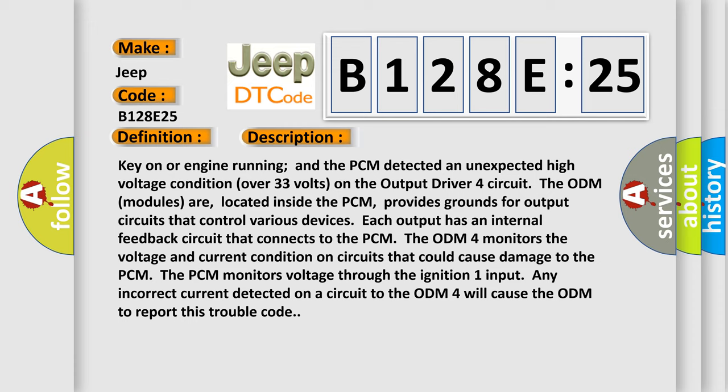The PCM provides grounds for output circuits that control various devices. Each output has an internal feedback circuit that connects to the PCM. The ODM-4 monitors the voltage and current condition on circuits that could cause damage to the PCM. The PCM monitors voltage through the ignition one input. Any incorrect current detected on a circuit to the ODM-4 will cause the ODM to report this trouble code.